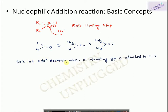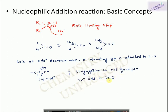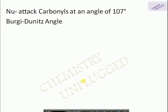Electron-donating groups reduce nucleophilic addition to carbonyl groups, while electron-withdrawing groups enhance it. If we have a double bond in conjugation with the carbonyl group, this bond shifts and the positive charge is now present on the beta carbon — so it shows 1,4-addition instead of addition at the carbonyl carbon. Similarly, conjugation in the form of a benzene ring is also not favorable for direct nucleophilic addition to the carbonyl.